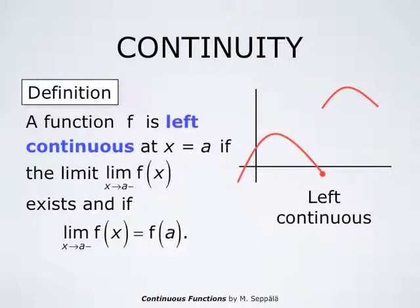To refine the concept of continuity, we say that a function is left continuous at x equals a if the left-hand limit as x approaches a through numbers smaller than a of f of x exists and equals the value of the function f at the point a. The red curve here is the graph of a function which is left continuous at the point indicated by the red dot.